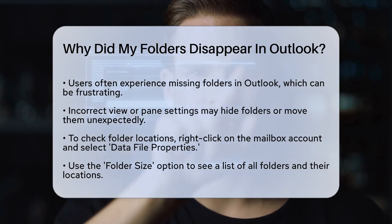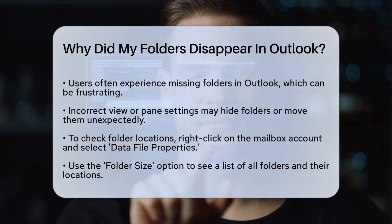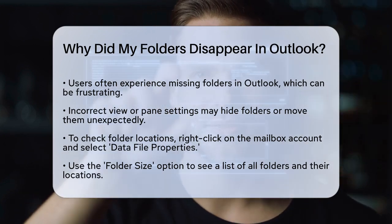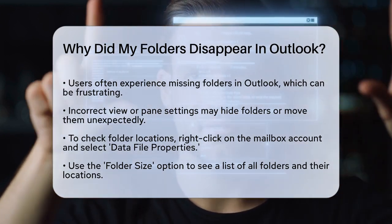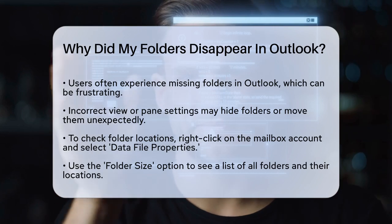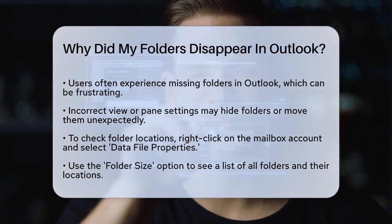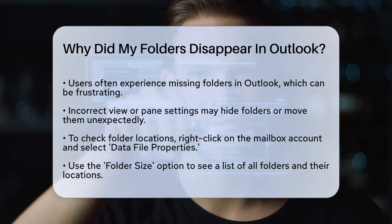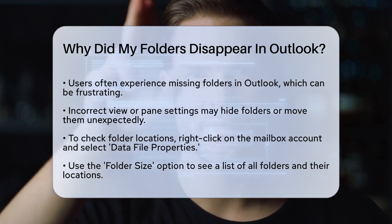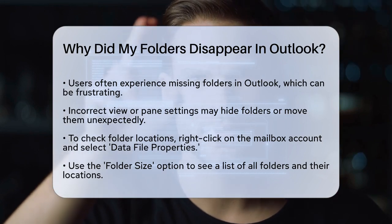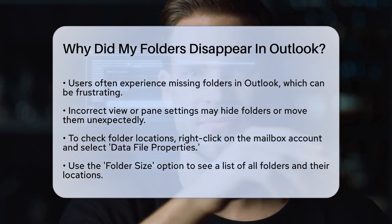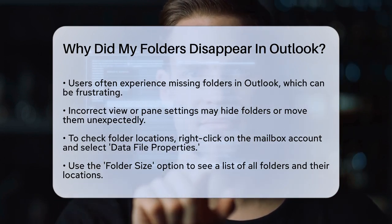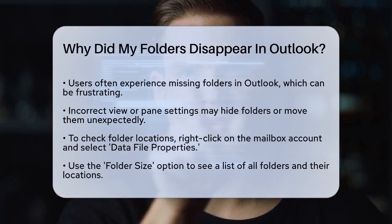First, it might be due to something as simple as incorrect view or pane settings. Sometimes folders can be hidden or moved to a different location without you realizing it. To check this, open Outlook, right-click on your mailbox account, and select Data File Properties. In the Outlook Properties window, click Folder Size to see a list of all your folders and their locations. If you find the missing folder, note its location and navigate to it in Outlook.